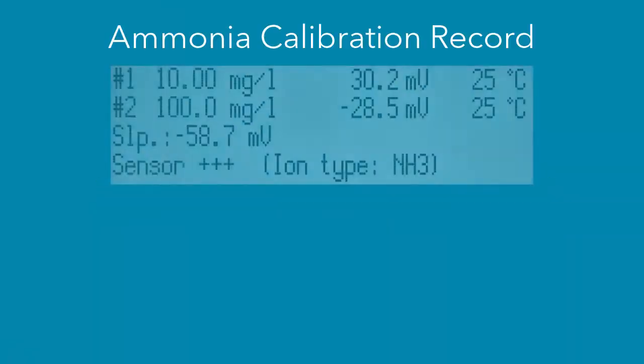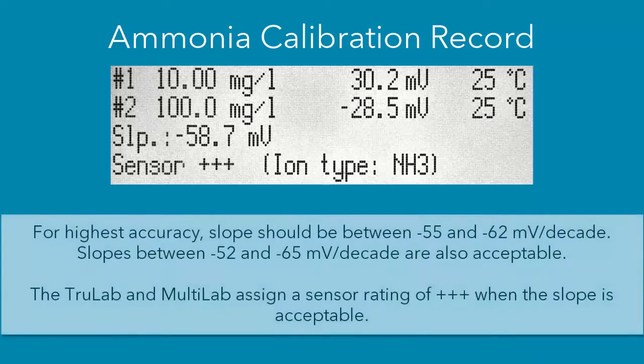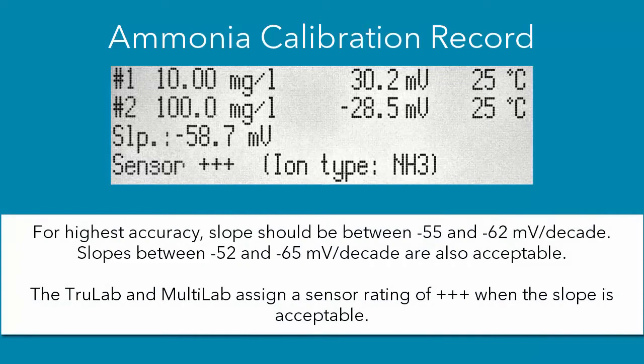So when calibration is complete, a full calibration record will be shown. This calibration record will display the calibration points that you did. So in our case, we did 10 and 100 mg per liter standards. And you can see the millivolt values that are associated with that. Also, the slope will be displayed. You will really want to pay attention to what that slope is because that will tell you how good that calibration was basically.